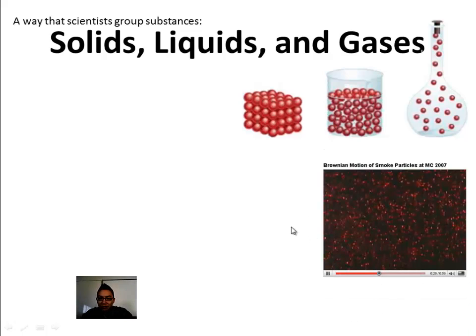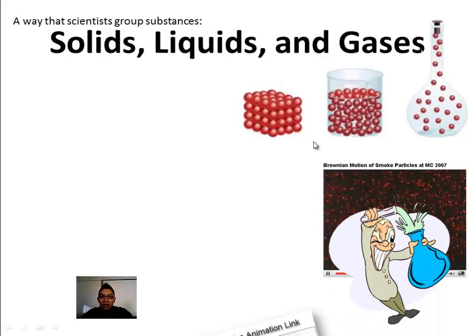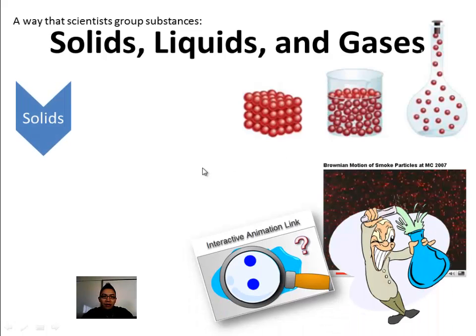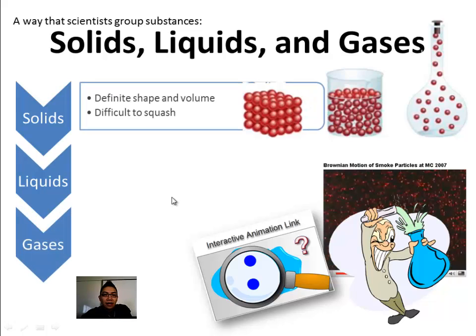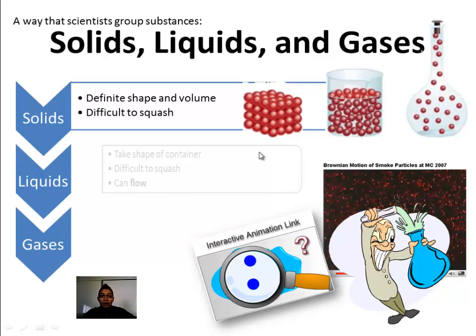We're going to see a little image of this showing smoke particles moving around as well. Basically, if you're looking at solids, liquids, and gases, solids by definition are difficult to squash. So it's hard to squish solids. If something's already quite solid like this iPhone, I can't really easily change the shape of it without seriously damaging this thing. It has a definite shape and volume.